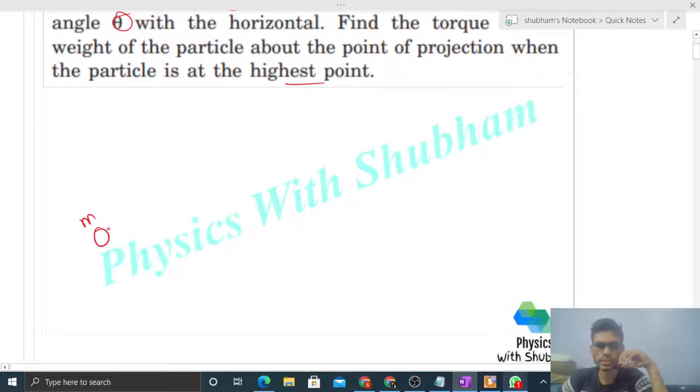We have a particle of mass m projected at angle θ with initial speed u. This particle moves in a projectile path, and at the highest point, its weight acts vertically downward. We need to find the torque of this weight about the point of projection, let's call it point O.